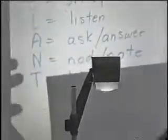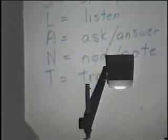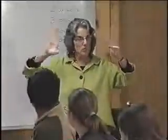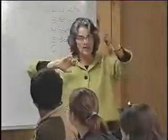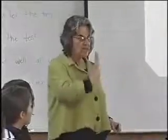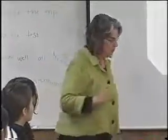T is for track. This just means you need to keep track of the teacher. So if I'm speaking and I'm here, your eyes are perfectly on me. If I walk over this way, your eyes are again on me. You keep track of the teacher.